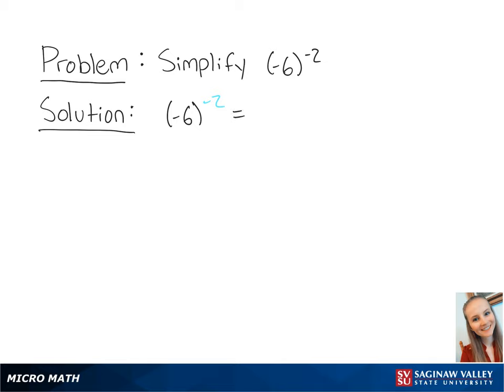This is going to be equal to 1 over negative 6 squared. This is because a negative exponent becomes positive when you put it in the denominator.